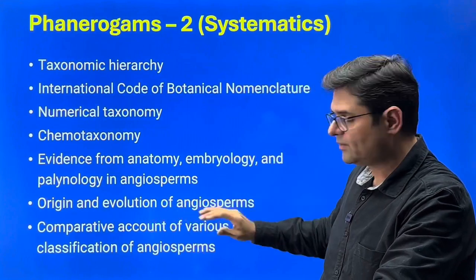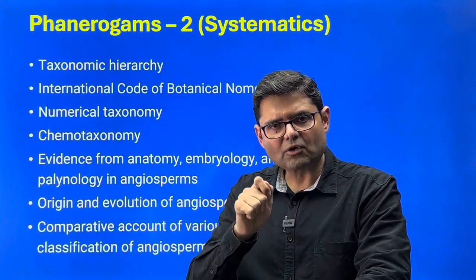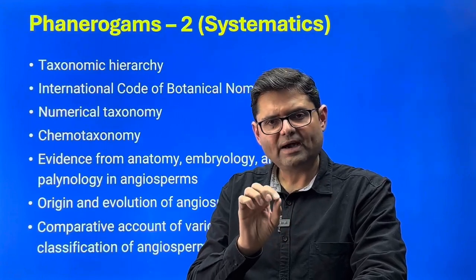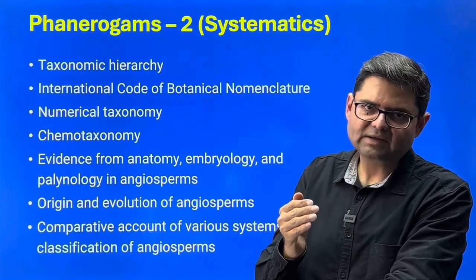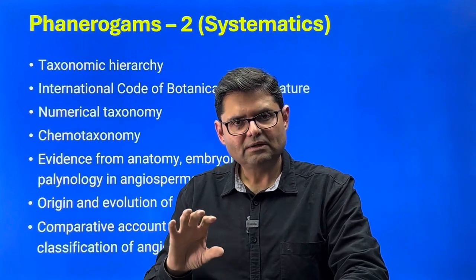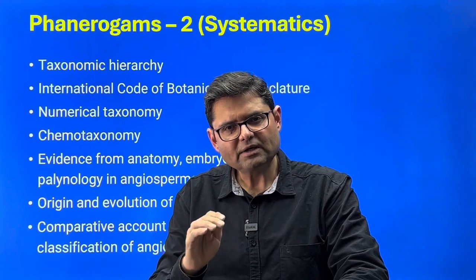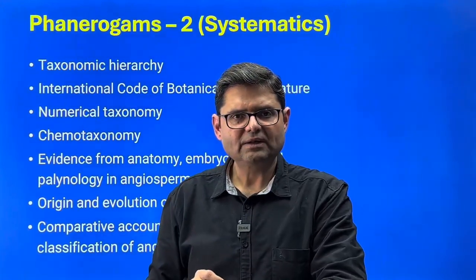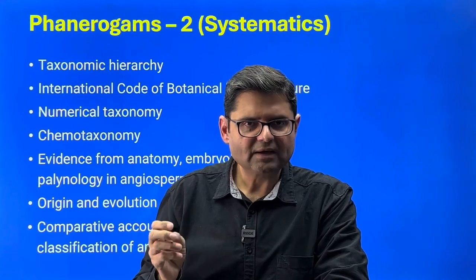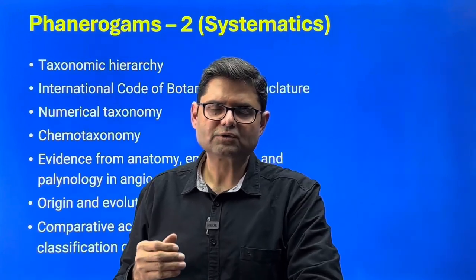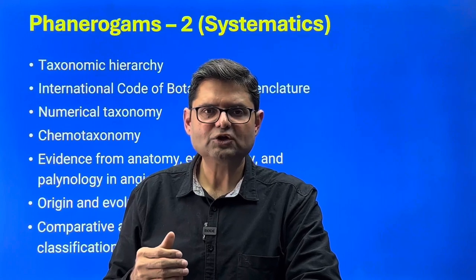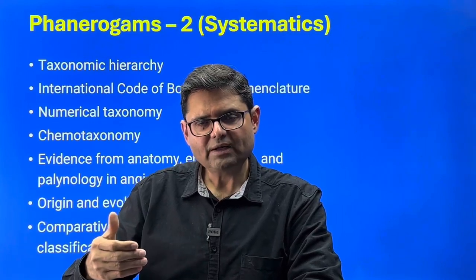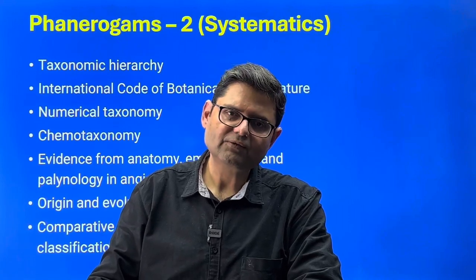Origin and evolution of angiosperms is still not a concretely settled question, so cover different theories, each briefly, with the most acceptable modern theory in significant detail — knowing the key fossils on which modern theories are built. Then comparative accounts of various classification systems: Bentham and Hooker, Engler, Hutchinson, Cronquist, Takhtajan, and the Angiosperm Phylogeny Group. Know each individually and then be able to compare them.